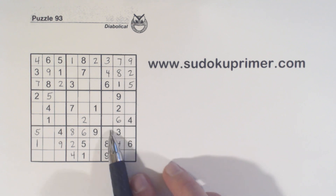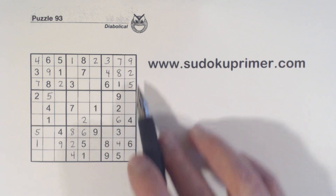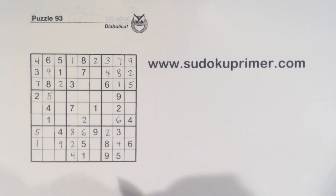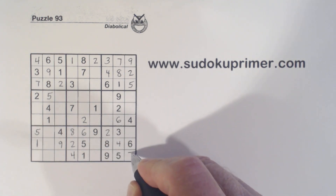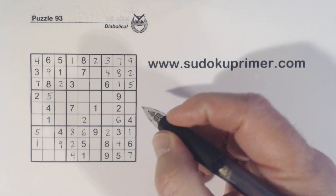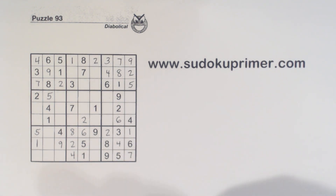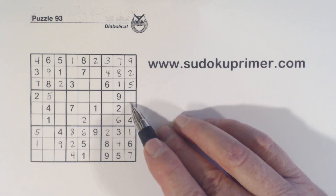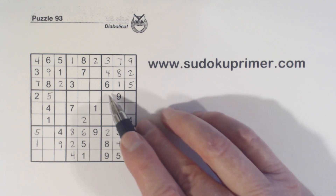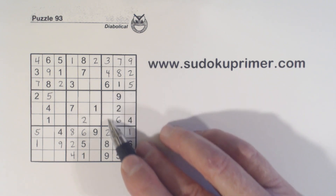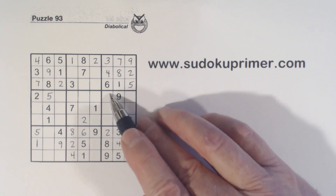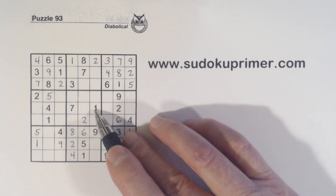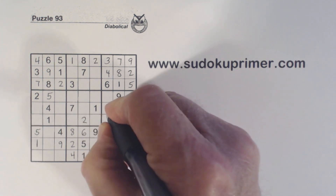Now we're missing one, two, and seven in box nine. With the two there, we can put a two there. And with this one, we know that's a seven and that's a one. Now we're only missing three and eight there — we can't solve those — but that leaves one through nine. One, five, and seven there; one and seven, that makes that a five.